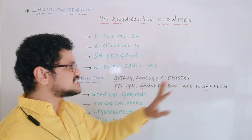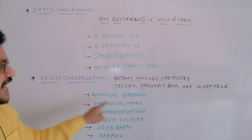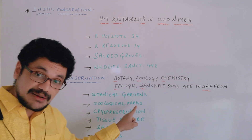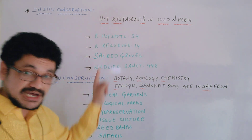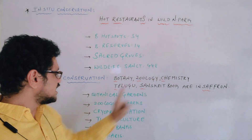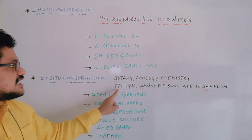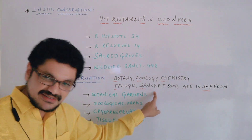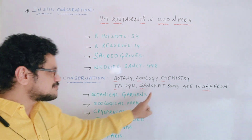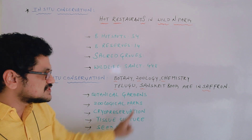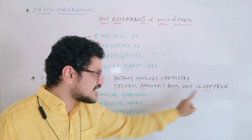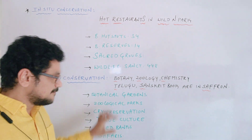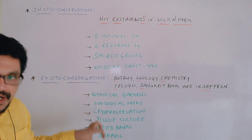Here I have represented each word: B for botanical garden, zoology for zoological parks. There it is national park and here it is zoological park. C for cryopreservation. T for tissue culture. Sanskrit represents seed banks — S for seed banks. And 'saffron' means safaris. So these are all the simple techniques under ex-situ conservation.